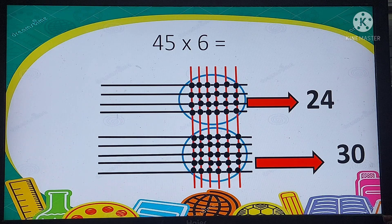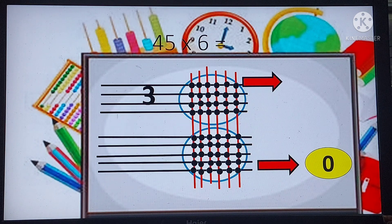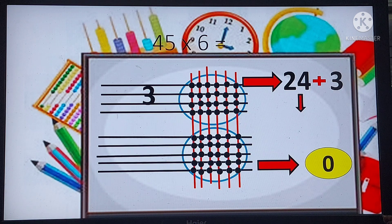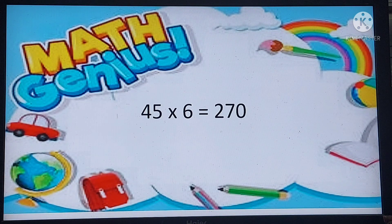Now let us arrange these numbers — 24 and 30 — to reach our desired answer. For 30 we carry 3 on top and write 0 at the bottom. Moving to the upper circle, we have 24, and we add the 3 carried over, giving us 27. So the final answer is 2, 7, 0 — that is 270.